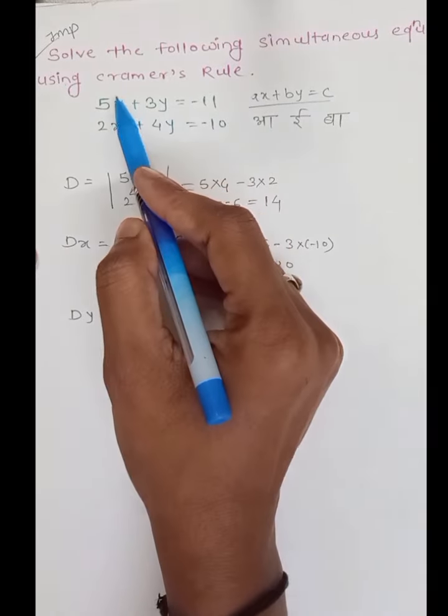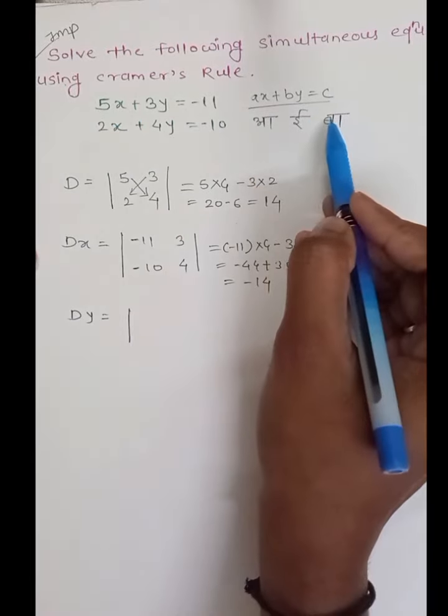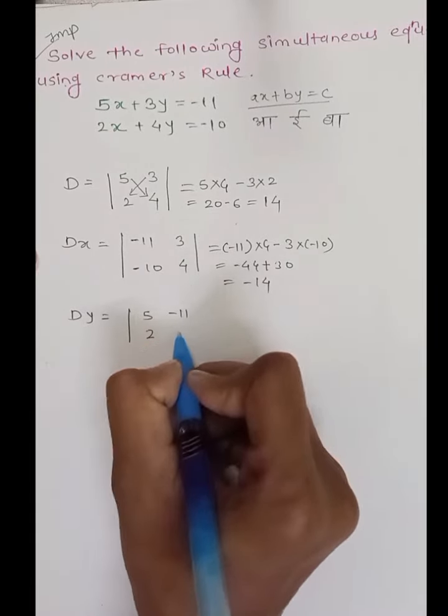What do we do? We find the y coefficient. What do we do? 2 minus 11, minus 10.